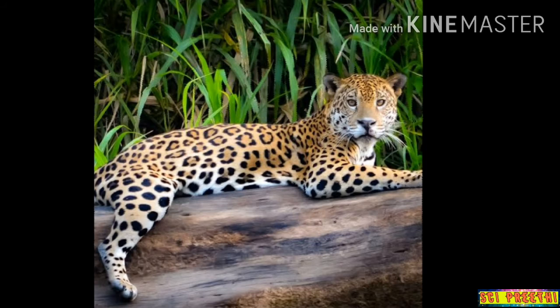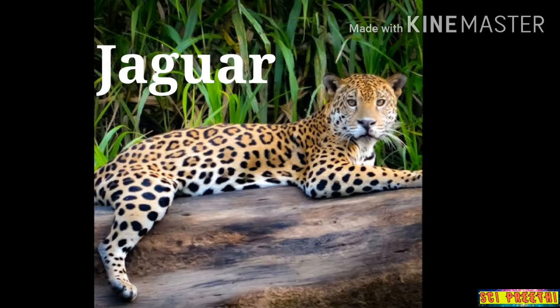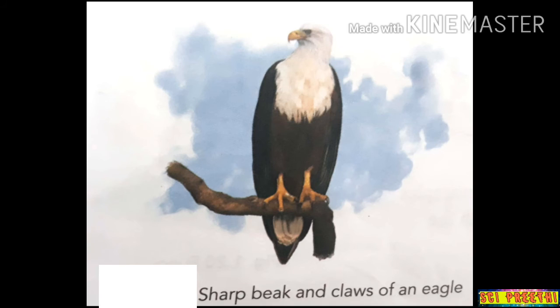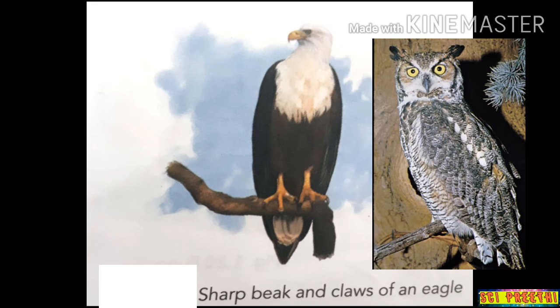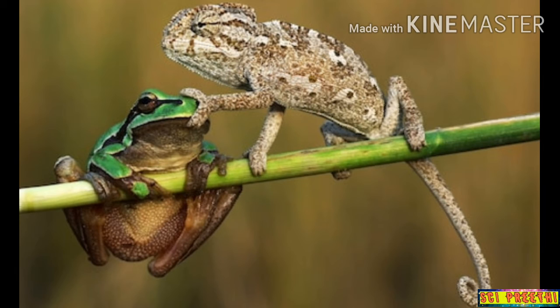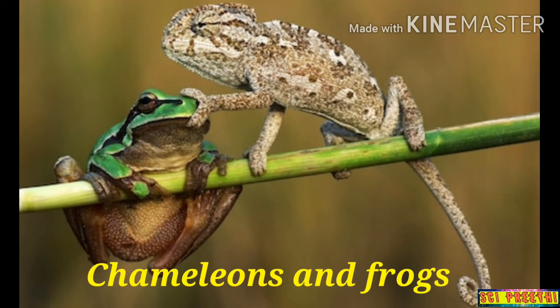The jaguar is generally a quick runner, which helps it catch prey easily, and it has big, strong claws to hold prey. Eagles and owls have sharp eyesight to spot prey easily, sharp pointed and curved claws to catch prey, and a curved beak to tear flesh easily. Chameleons and frogs have long and sticky tongues to catch insects easily.